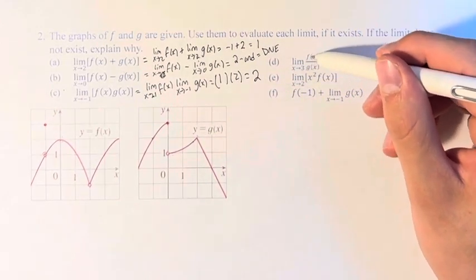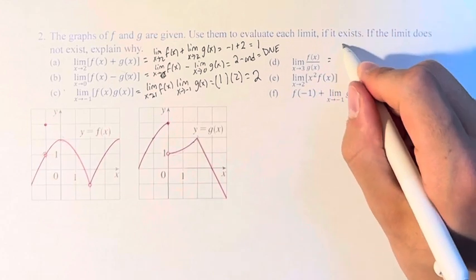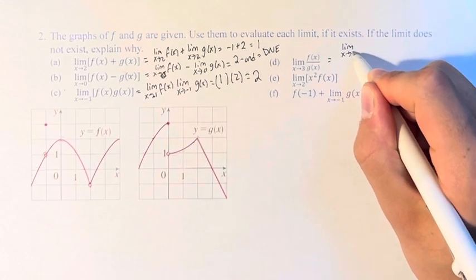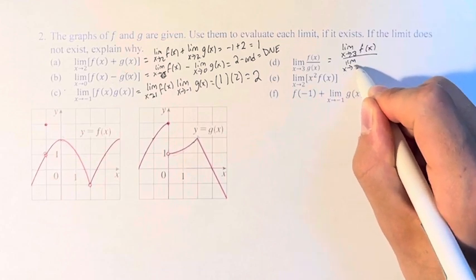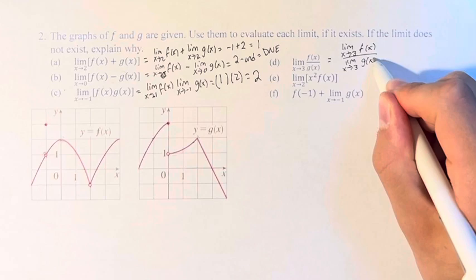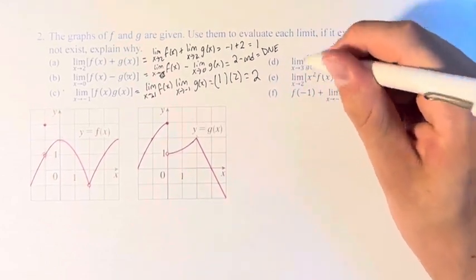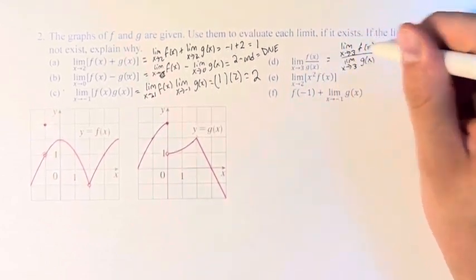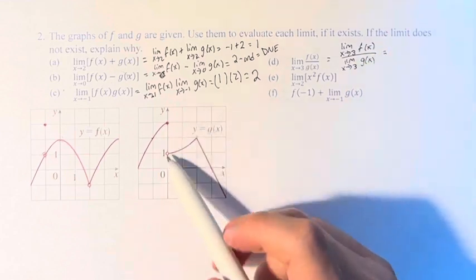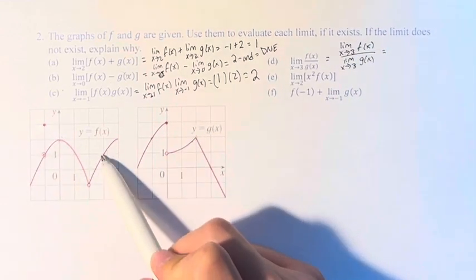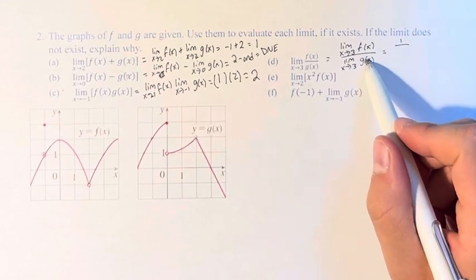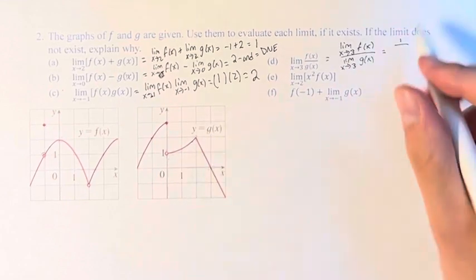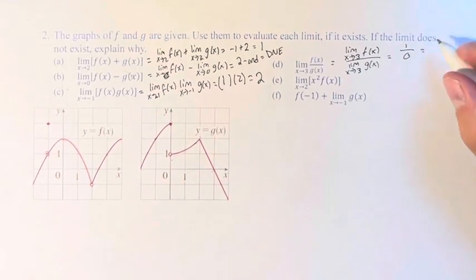Next, the limit as x approaches 3 of f(x) over g(x). Just like with the other steps, you separate it out and take the individual limits, then apply whatever operations you need to. We have a division, so we take the individual limits and then divide them. As x approaches 3, f(x) over here approaches this point right here at 1. And as x approaches 3, g(x) approaches this point right here at 0. So this is undefined — the limit does not exist.